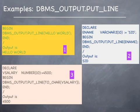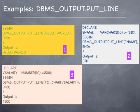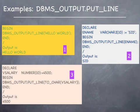On this slide are three examples of the DBMS_OUTPUT.PUT_LINE statement. The first example displays the words 'Hello World' on the screen, enclosed in single quotes. In the second example, a variable called ename is being declared and assigned an initial value of SID. In the body of the program, the DBMS_OUTPUT.PUT_LINE statement displays the value of the variable ename. Notice ename is not enclosed in single quotes. The output of that program is the name SID.